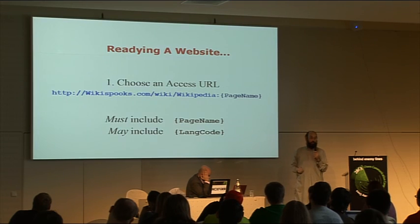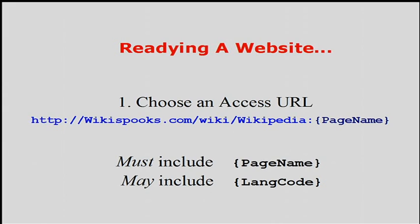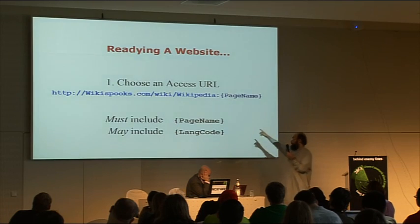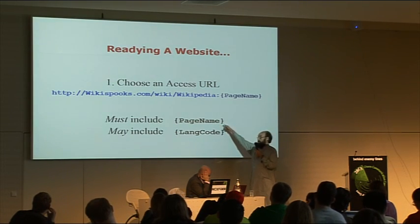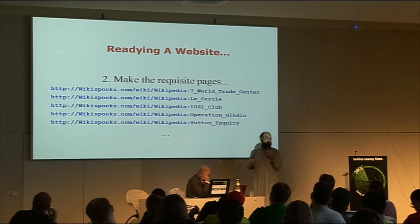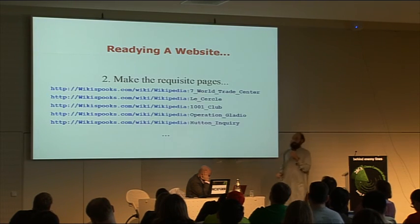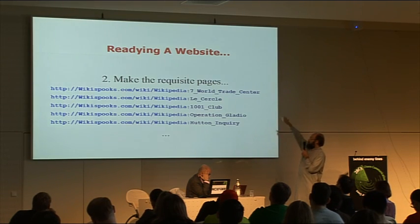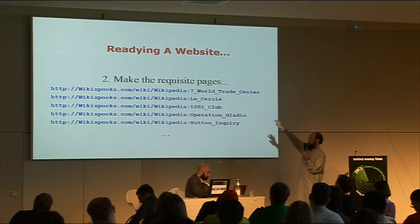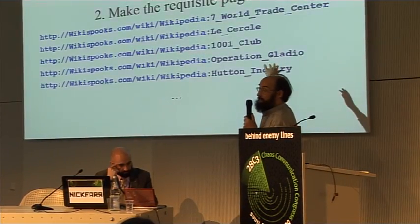So how do you get your website ready for this? You choose an access URL. If you're in a wiki, you might want to dedicate a separate namespace — this is just incoming access points for people who are using this. You have to include a page name because that's how you vary the access points, and then you send that to one of your existing pages. You may include a language code if you've got a multi-language website, then you go ahead and make the pages.